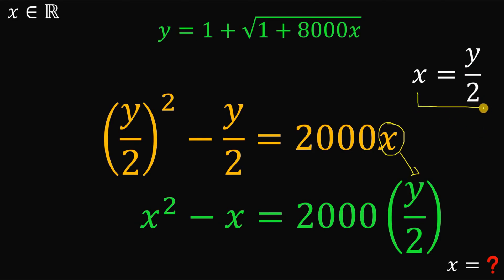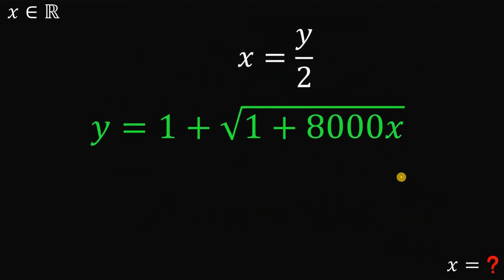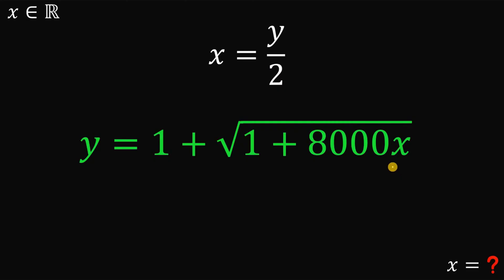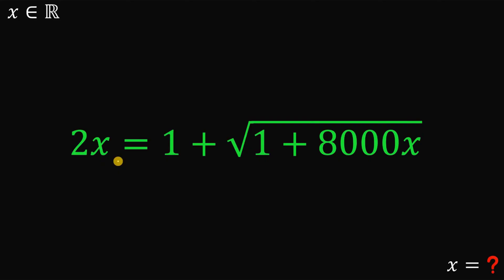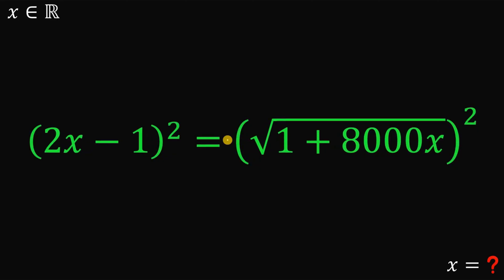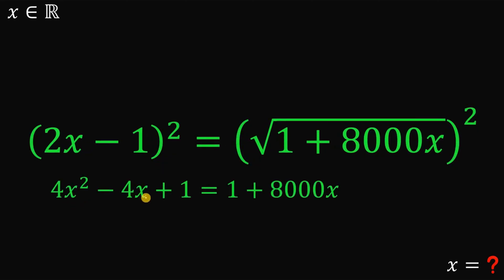Using the result x equals y over 2 — so y equals 2x — and substituting into y equals 1 plus the square root of 1 plus 8,000x: we replace y with 2x, subtract 1 from both sides, then square both sides to eliminate the square root. This gives 4x squared minus 4x plus 1 equals 1 plus 8,000x.